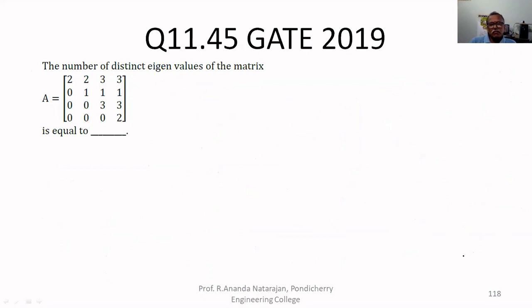The number of distinct eigenvalues of the matrix A equal to A, so it is upper triangular matrix. It is upper triangular matrix.